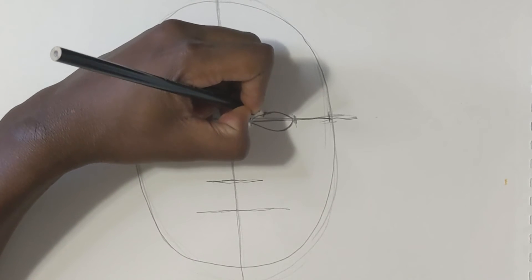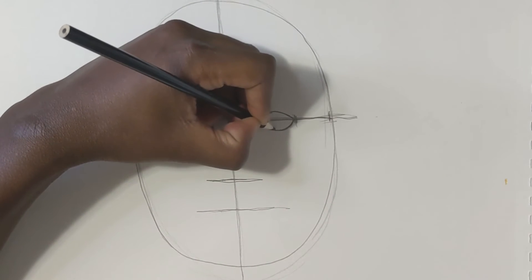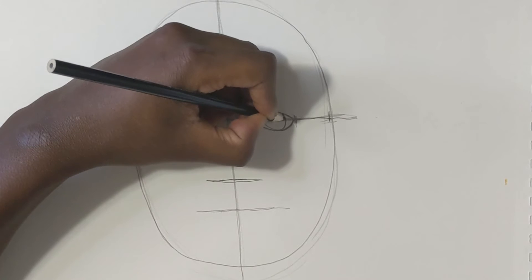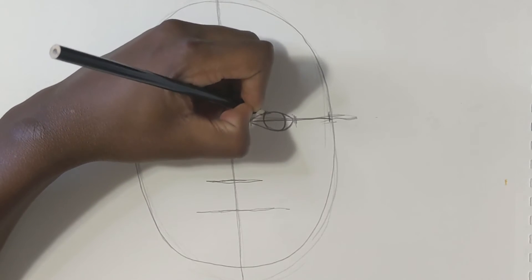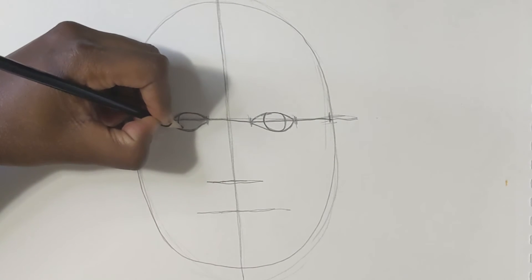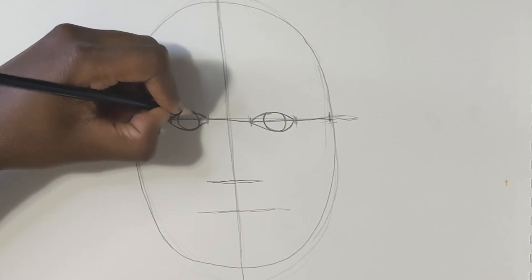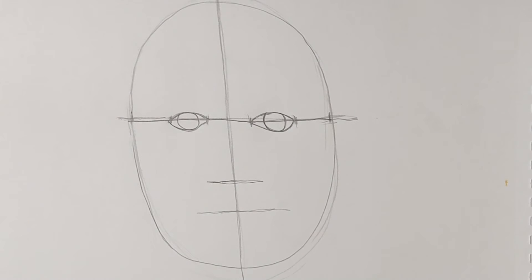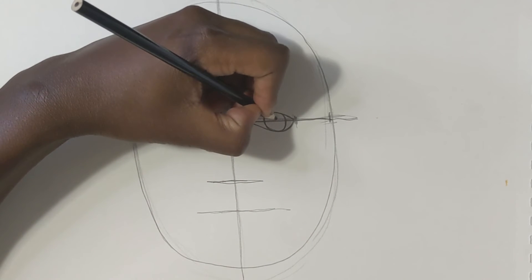Your irises are going to go in. You shouldn't be able to see the top of the eye unless they're afraid or surprised. So there's one eye, there's two iris shapes.